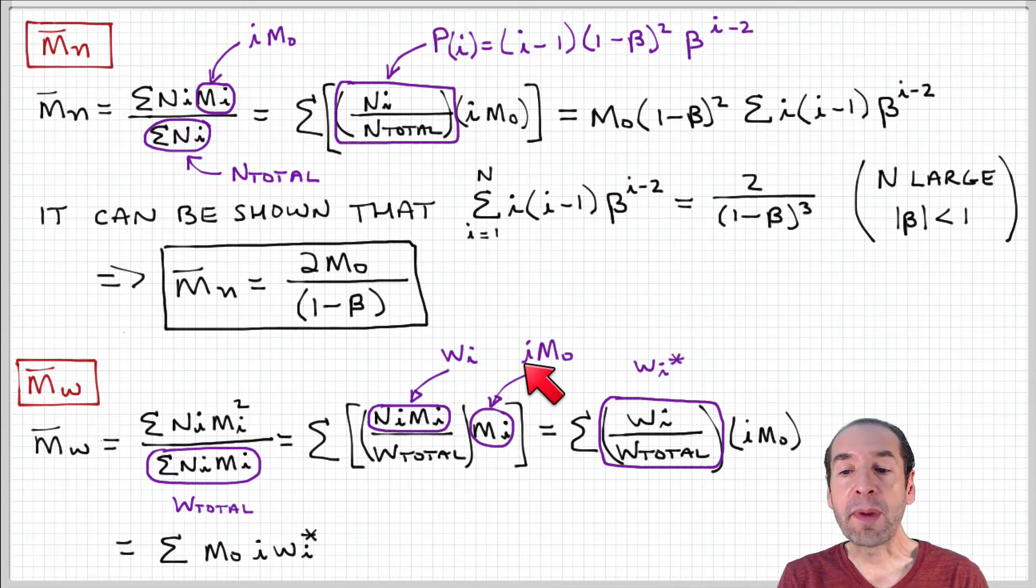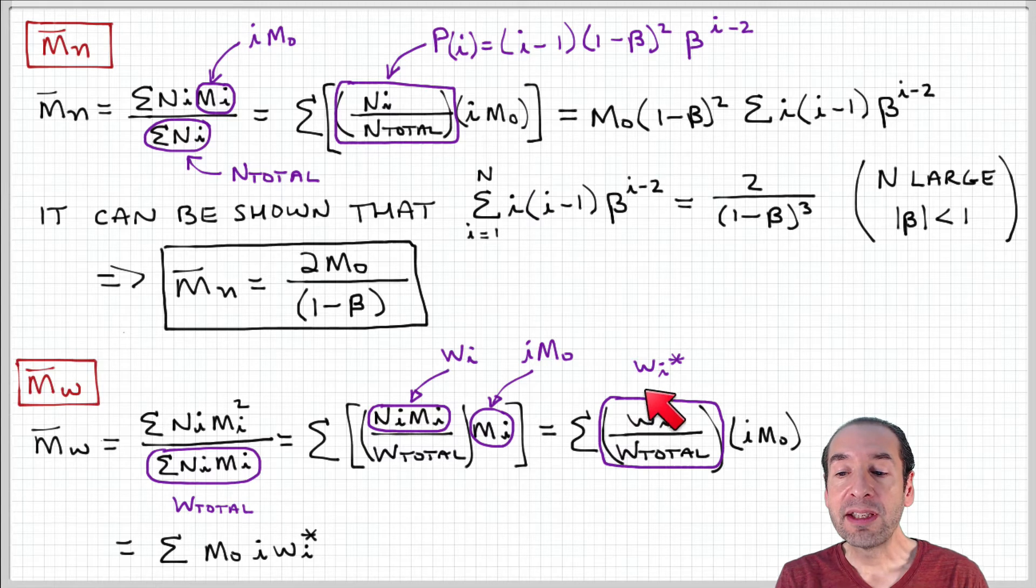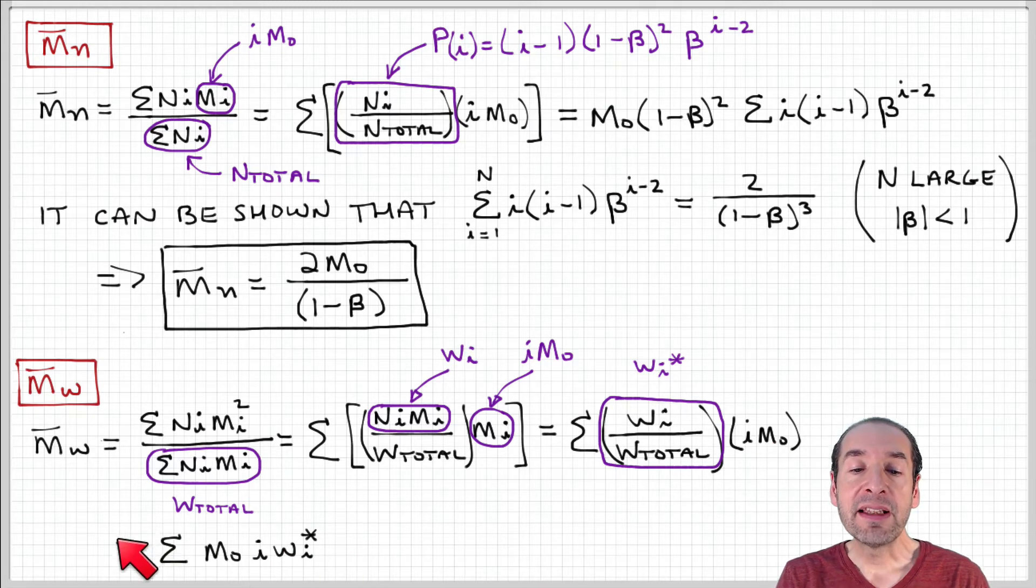It's I, the number of monomers times the monomer molecular weight. Notice that this weight of the fraction of polymers that have length I relative to the total weight of polymer is actually the weight fraction, which I'm denoting as WI star. So I can simplify the expression for the weight average molecular weight as follows.